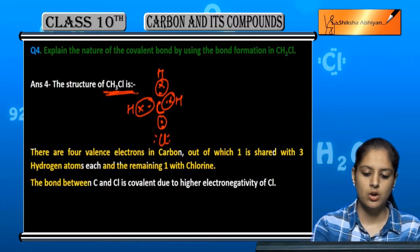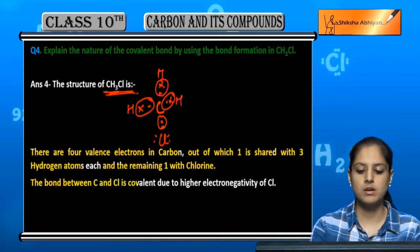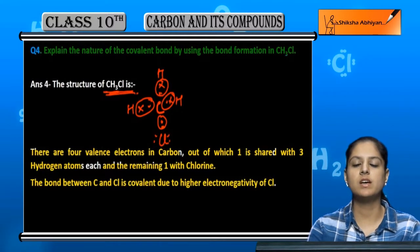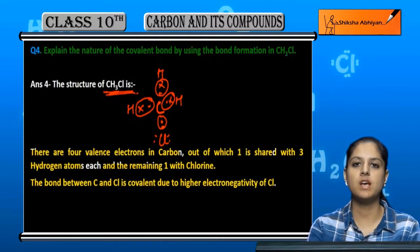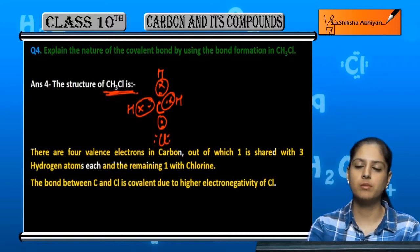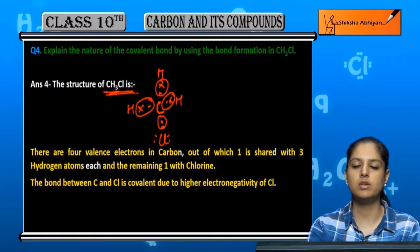The bond between C and Cl is covalent because chlorine has higher electronegativity. So in this way, the covalent bond will make a covalent bond in this way.